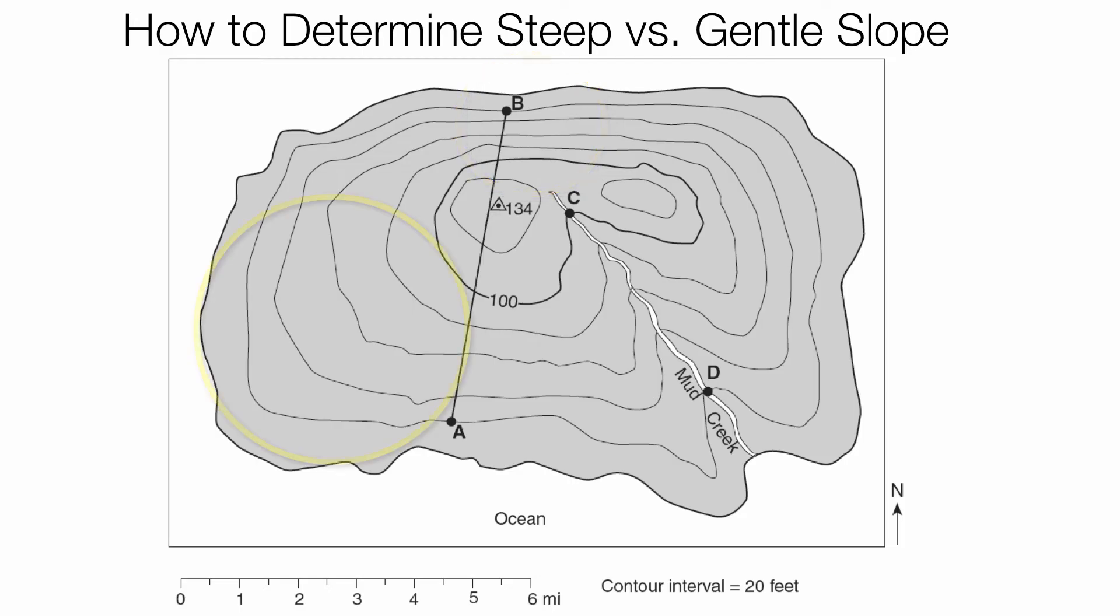When you compare that with the side of the mountain, or the side of the island in this case, where the lines are very far apart, it means you have a very gentle slope and you have a significantly lower gradient. You don't have as much change over a specific distance.